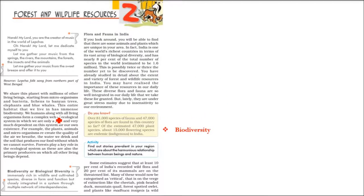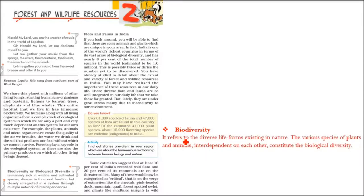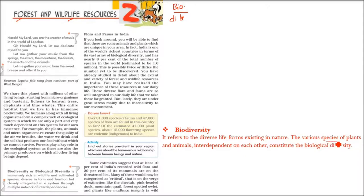The main thing when we talk about anything related to forest and wildlife is biodiversity. This term refers to diverse life forms existing in nature. 'Bio' relates to plants and animals — the species — and 'diversity' means different forms. So biodiversity means different forms of plants and animals of any type and size that exist in nature. Various species of plants and animals — which we call flora and fauna — are quite interrelated and interdependent on each other, and this constitutes biological diversity, or biodiversity in short.